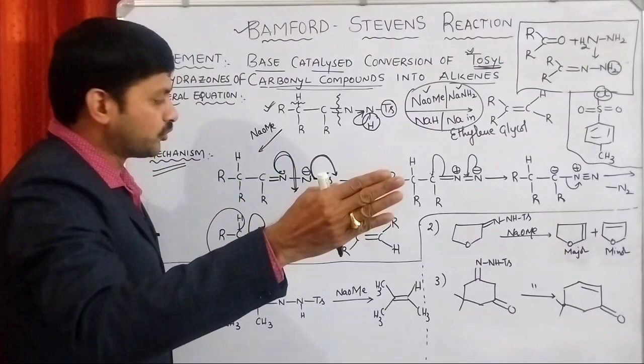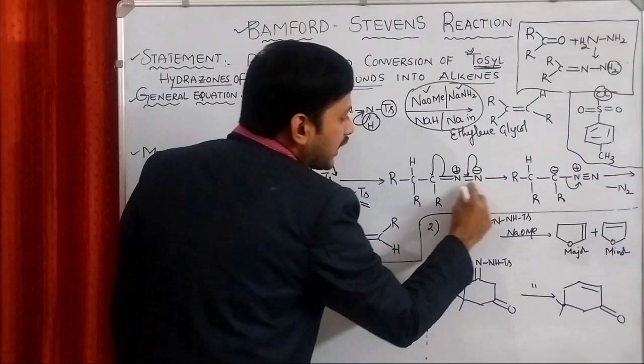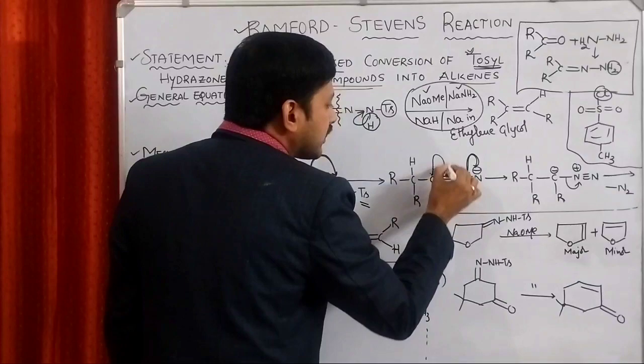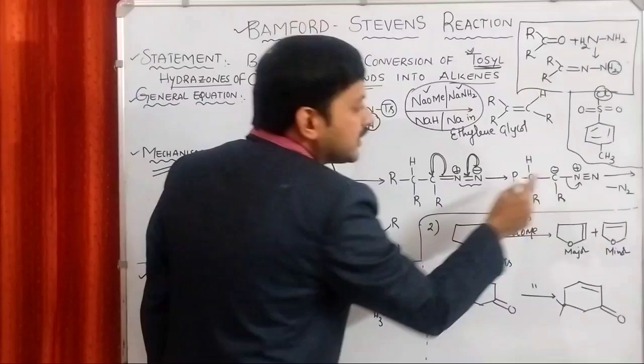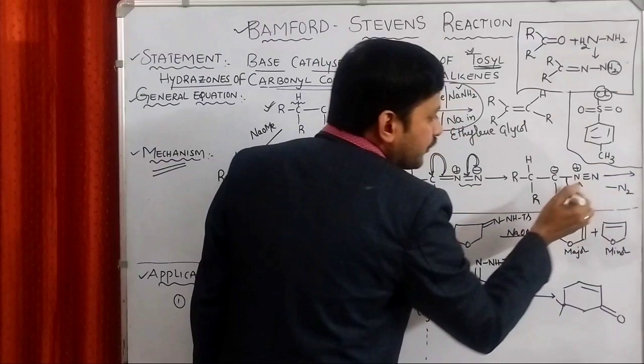Then we will come up with carbon-nitrogen pi bond and nitrogen-nitrogen pi bond. This minus charge again comes back to form a pi bond between two nitrogens. That is going to be triple bond and the carbon is going to get minus charge.